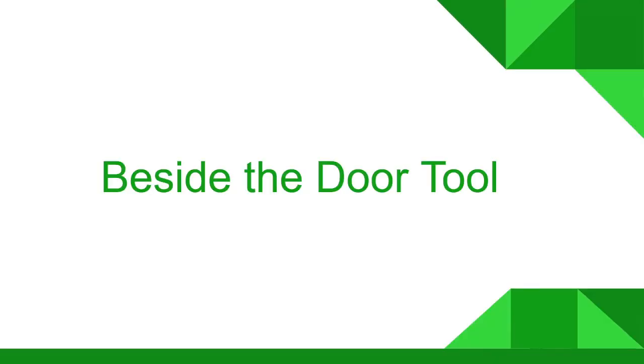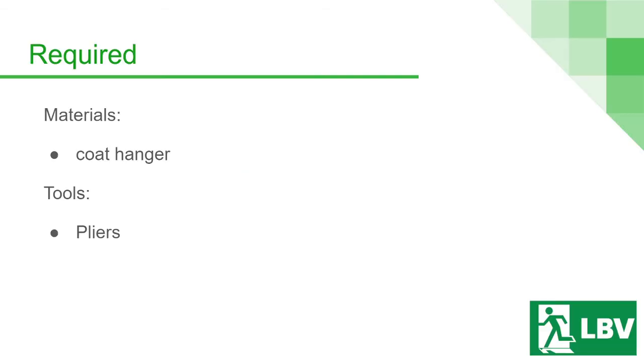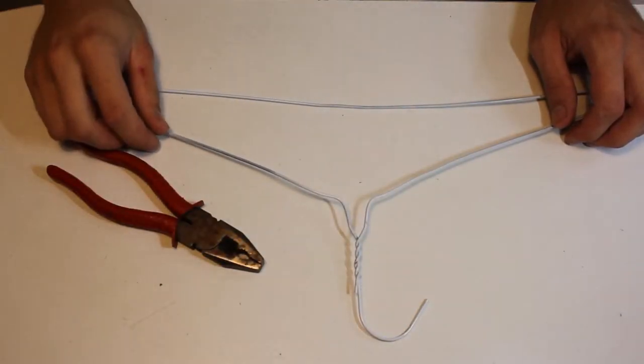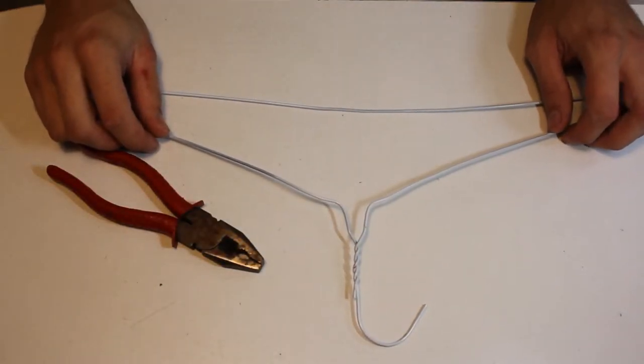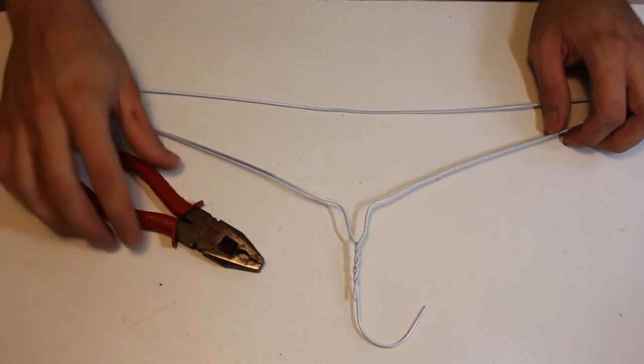We'll now be making the beside-the-door tool. The materials required is a coat hanger, and we will need a pair of pliers. So, we're going to be making the beside-the-door tool in this video.